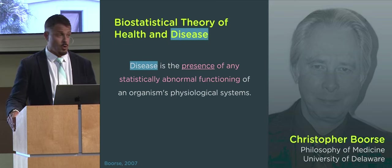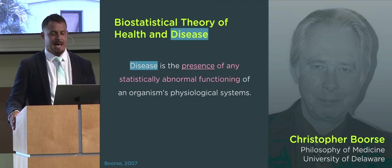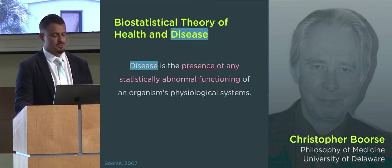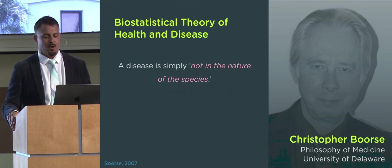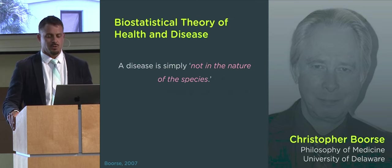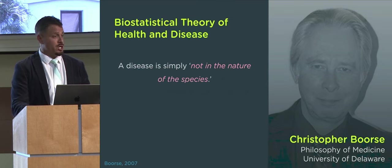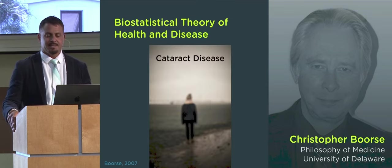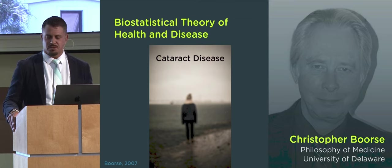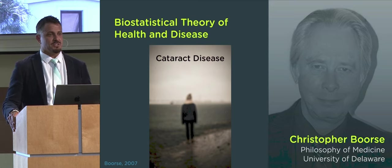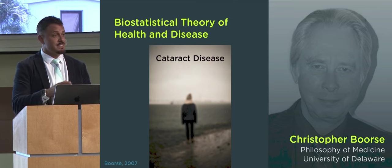What about disease? According to Boers, disease is the opposite of health. It is the presence of any statistically abnormal functioning of an organism's physiological systems. A disease is simply not in the nature of a species. It is anything that prevents a body part from functioning normally or interferes with the performance of some natural function, thus decreasing chances for survival and reproduction. For instance, a cataract is an eye disease that causes blurry or hazy vision. It negatively impacts functioning of this physiological system and is therefore a disease. Diseases are internal states that depress a functional ability below a species-typical level.